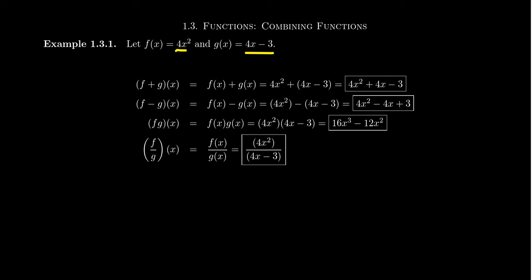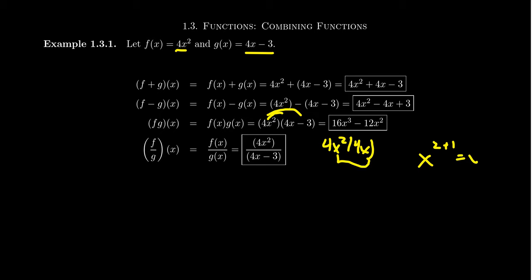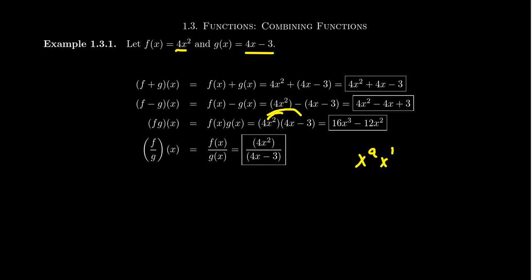Speaking of the distributive rule, when multiplying functions f times g, this means f(x) times g(x), so we get 4x² times (4x - 3). Since g has two terms, we distribute 4x² onto both pieces. The first piece: 4x² times 4x gives 16x³, since 4×4=16 and x²×x = x^(2+1) = x³. The second piece: 4x² times -3 gives -12x². So if we know the distributive property and the rule x^a · x^b = x^(a+b), we can handle basic multiplication of functions.